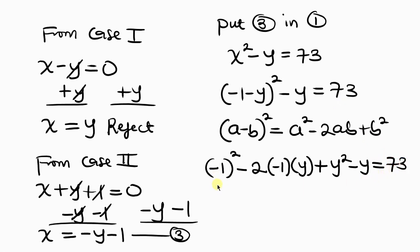Now let's simplify. Negative 1 squared gives 1, and negative 2 times negative 1 times y gives plus 2y, because negative times negative is positive.